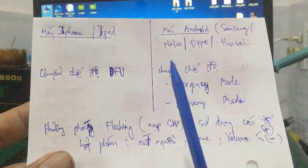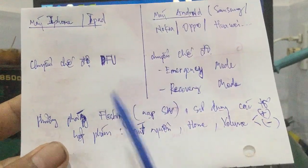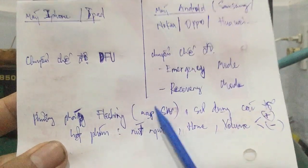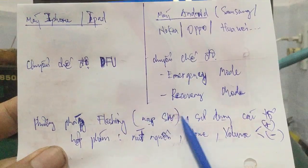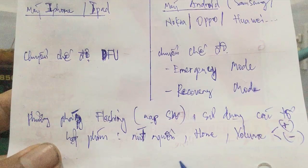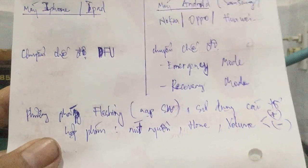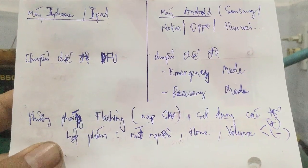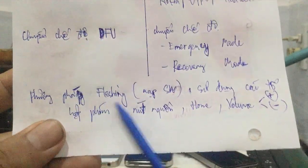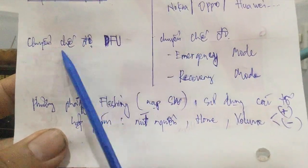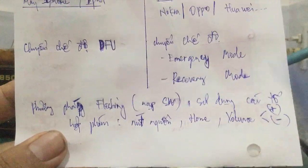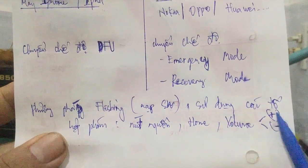Chạy chương trình là quá trình Blasting - nạp chương trình cho chip, nạp software, bằng cách sử dụng các tổ hợp phím như nút nguồn, nút home, volume cộng, volume trừ. Bất kỳ điện thoại nào cũng có phương pháp để chuyển chế độ download khẩn cấp như DFU, Emergency Mode, Recovery Mode bằng cách kết hợp nút nguồn với volume cộng hoặc volume trừ.